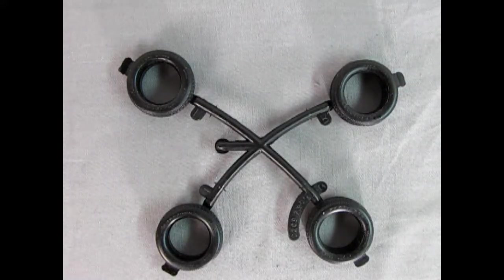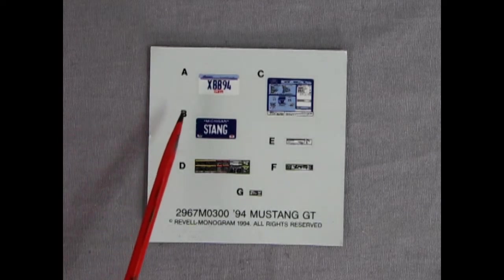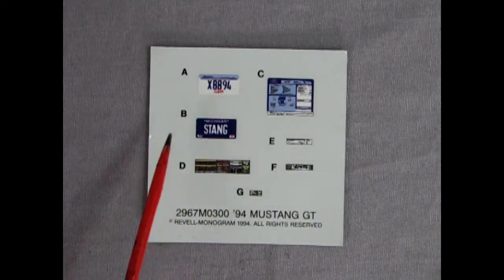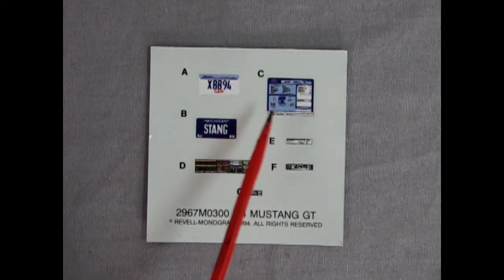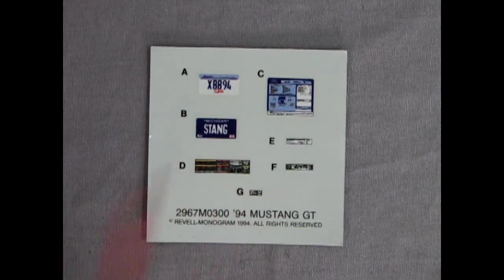Here we are again looking over the decal sheet. We've got an Illinois XBB94 license plate right there and then a Michigan STANG1 down below. Then we've got a window sticker for our dealership that has all the info of the car on there and then all the decals which go in the engine bay just to dress it up. Well I really hope you enjoyed this look at our 1995 Mustang GT model kit by Monogram. If you've built this model in the past let us know what you thought of it by writing it down in the description below.